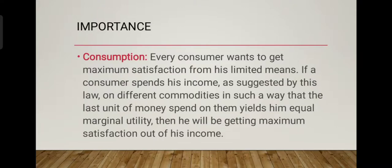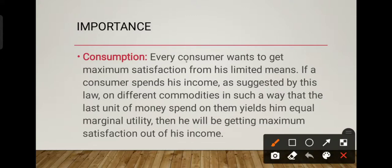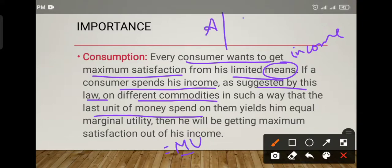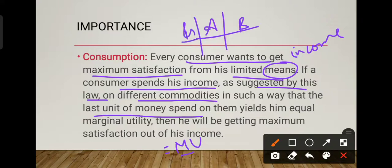Its first importance is consumption. Every consumer wants to get maximum satisfaction. What is the main motive of the consumer? Maximum satisfaction, maximum utility. If a consumer spends his income as suggested by this law on different commodities in such a way that the last unit of money spent on them yields him equal marginal utility, then he will be getting maximum satisfaction out of his income.